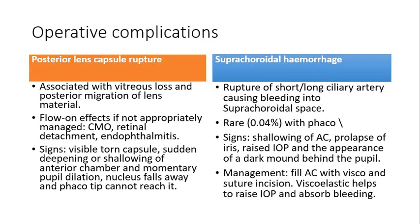Another operative complication is suprachoroidal hemorrhage, where rupture of the short or long ciliary artery causes bleeding into the suprachoroidal space. It's quite rare with phacoemulsification — occurring in about 0.04% of cases. Signs are shallowing of the anterior chamber, prolapse of the iris, raised intraocular pressure, and a dark mound behind the pupil. Management involves filling the anterior chamber with viscoelastic and suturing the incision; the viscoelastic helps raise IOP and absorb the bleeding.